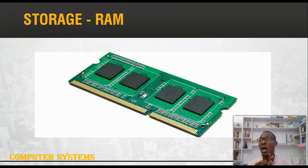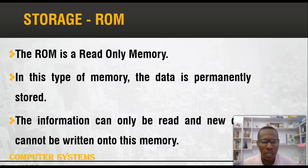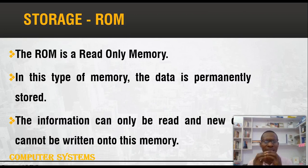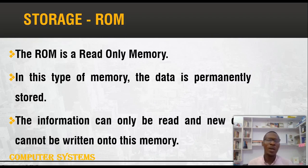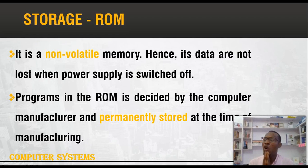The next type we discuss is ROM, which stands for Read Only Memory. Unlike RAM, the data in ROM is permanent. RAM is volatile and data is temporary, but ROM is non-volatile. The information on ROM can only be read but cannot be written. As the name implies, read only means we can read instructions from ROM but cannot write or store new data to it. Data on ROM cannot be lost even when power is switched off.